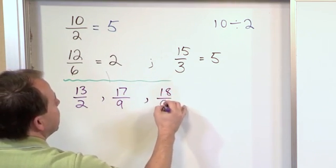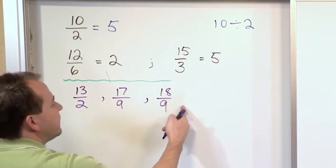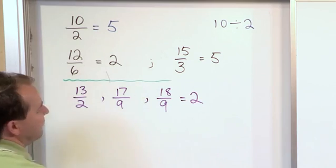What about 18 ninths? Well again, this looks like division, 18 divided by 9. This does go evenly, so I can rewrite that one as 2.